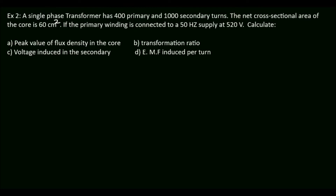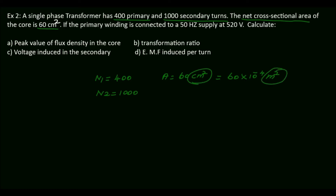The problem: a single phase transformer has 400 primary turns and 1000 secondary turns, so N1 = 400 and N2 = 1000. The net cross-sectional area of the core is 60 cm², which we convert to m²: 60 × 10⁻⁴ m². We represent area in m².